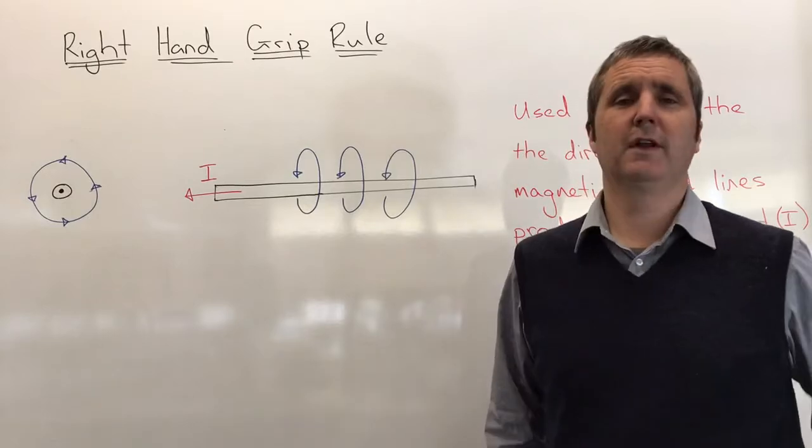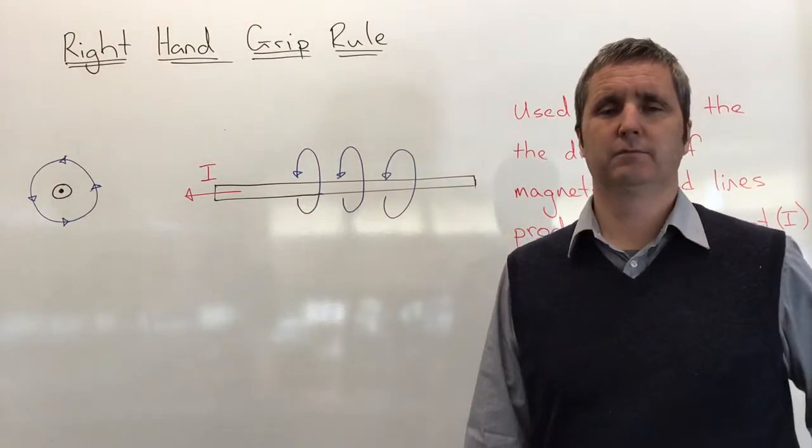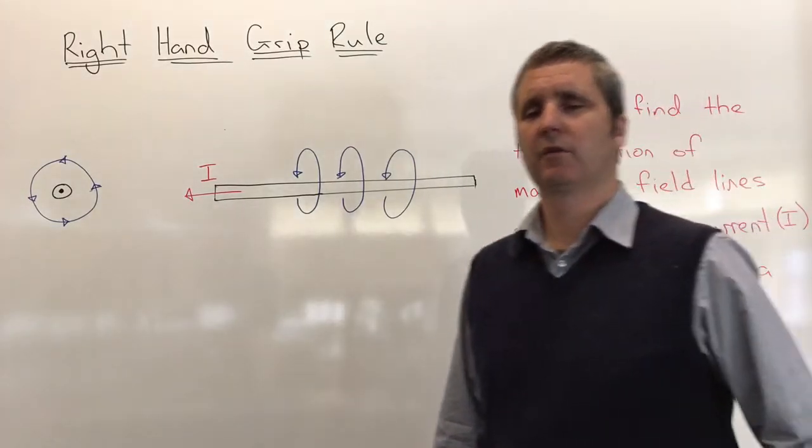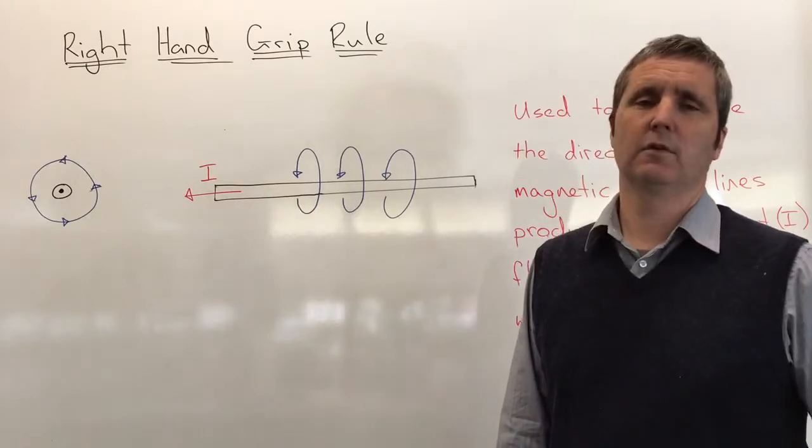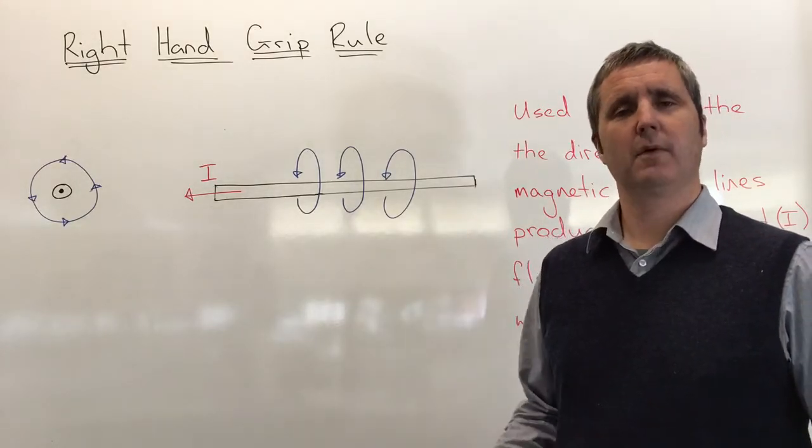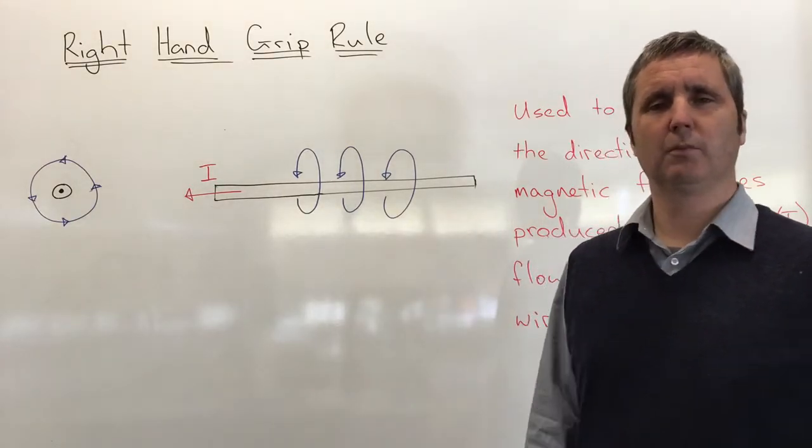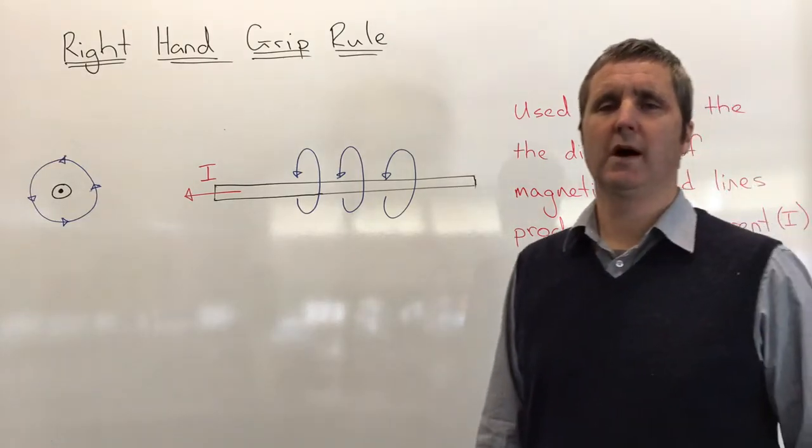Hi, welcome to this short video to explain the right hand grip rule. We use the right hand grip rule when we want to work out the direction of magnetic field lines that are produced by a current traveling through a wire.